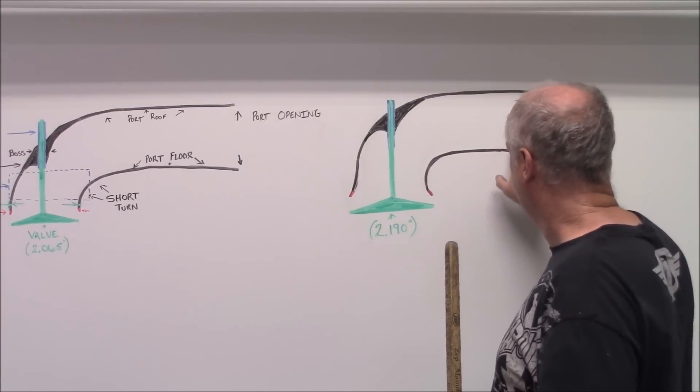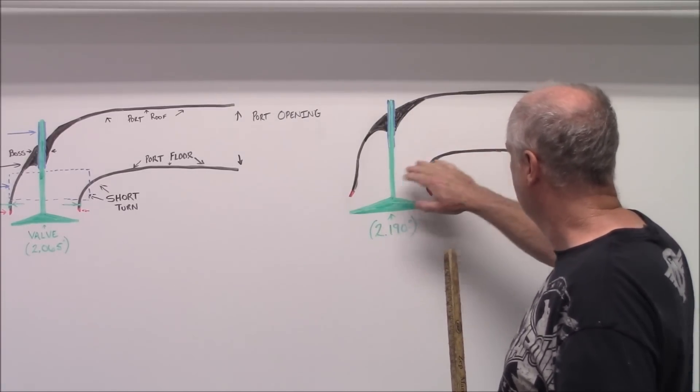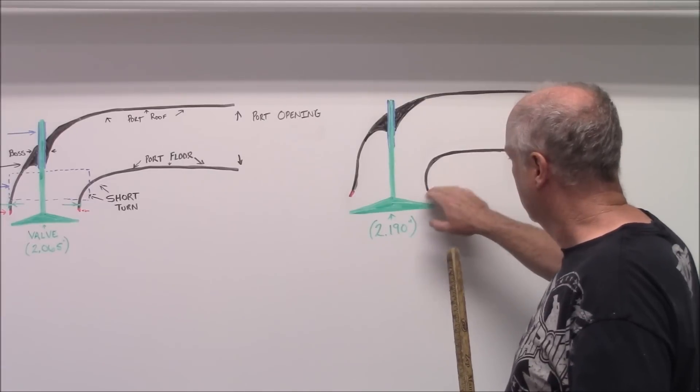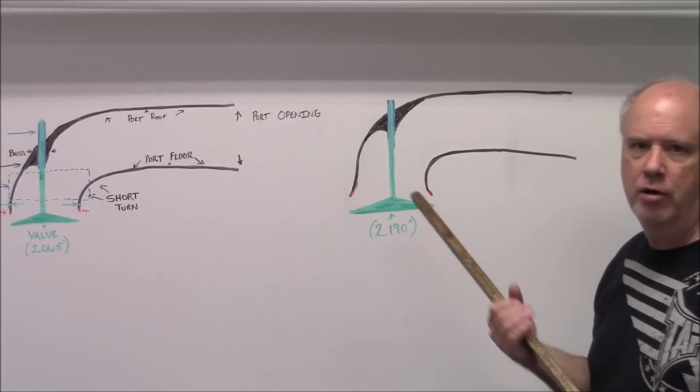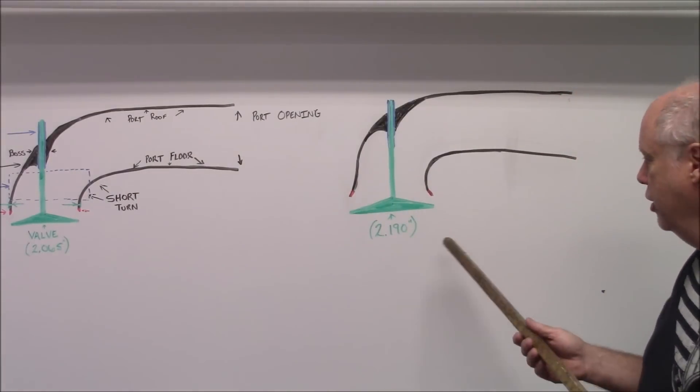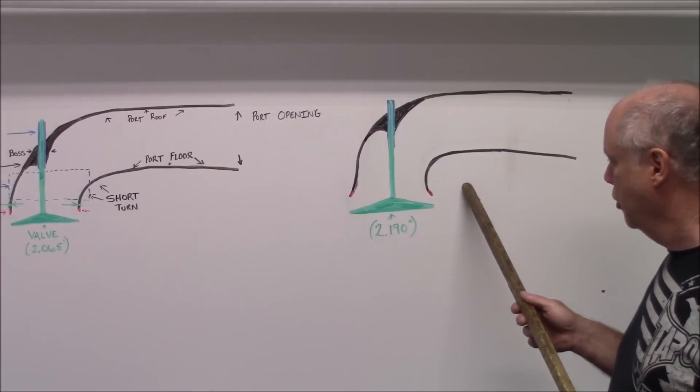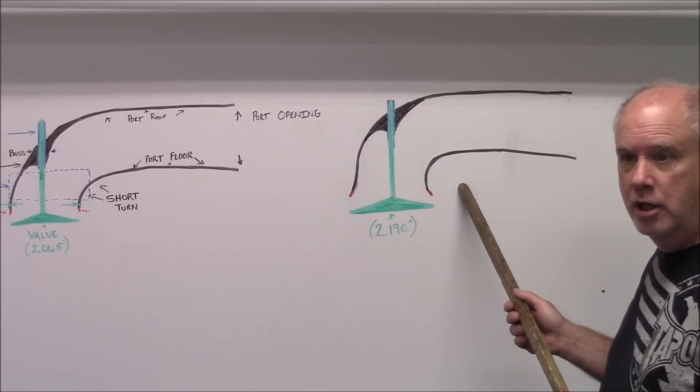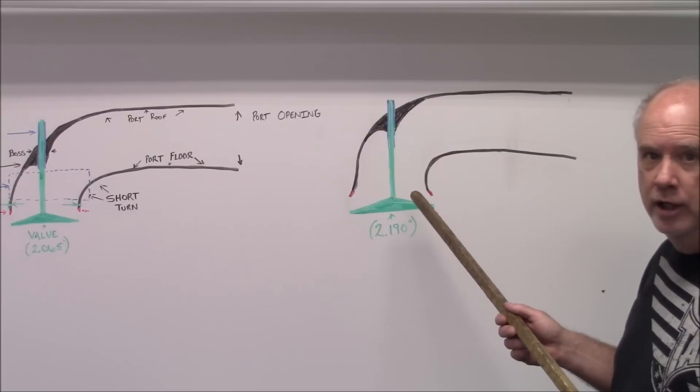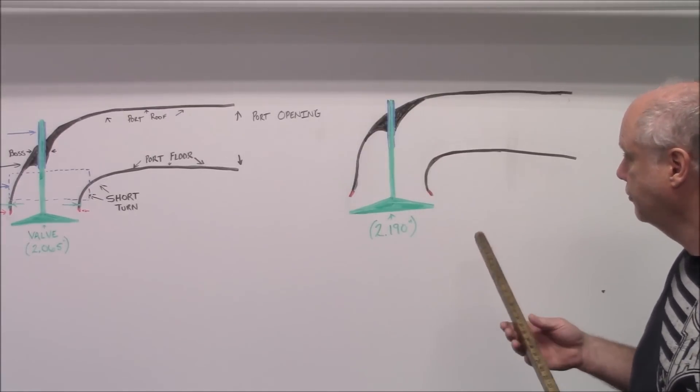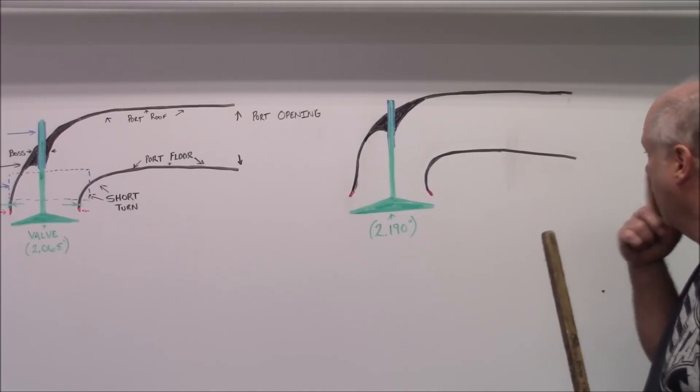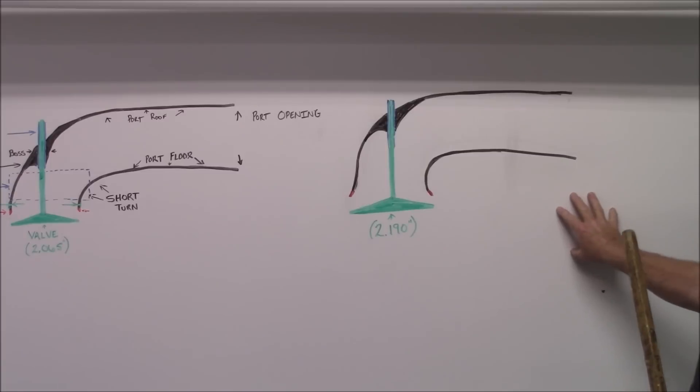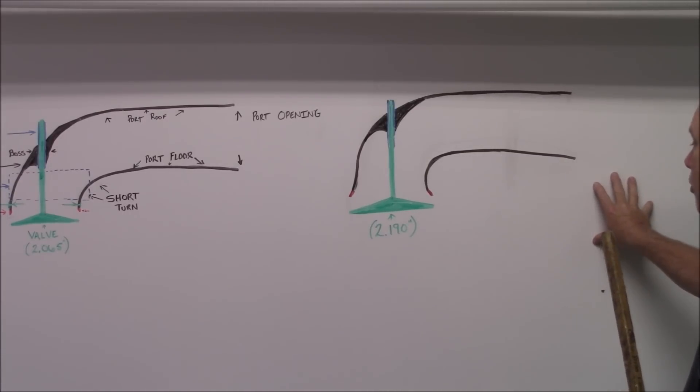So, what we're going to do is we're going to modify this port and change the shape of the port, so this will keep flowing past 500 lift. And we showed in our earlier videos how putting a 2190 valve in a production head with no porting can actually lose flow at the higher lifts. This is what we're talking about. So, what we're going to do is we're going to draw this shape again showing what it should look like when we're done to give you a good idea of what we're talking about here.